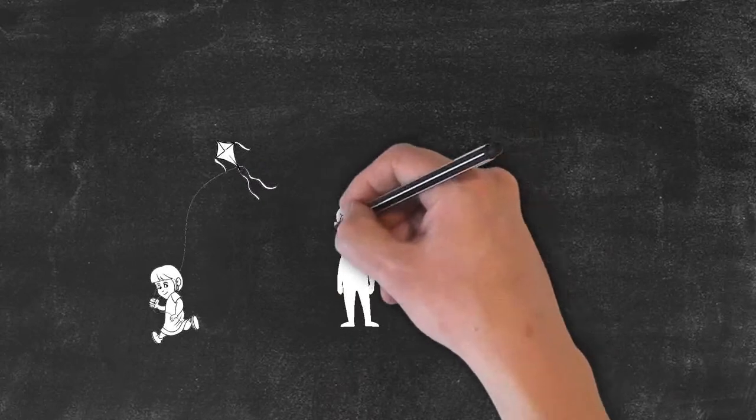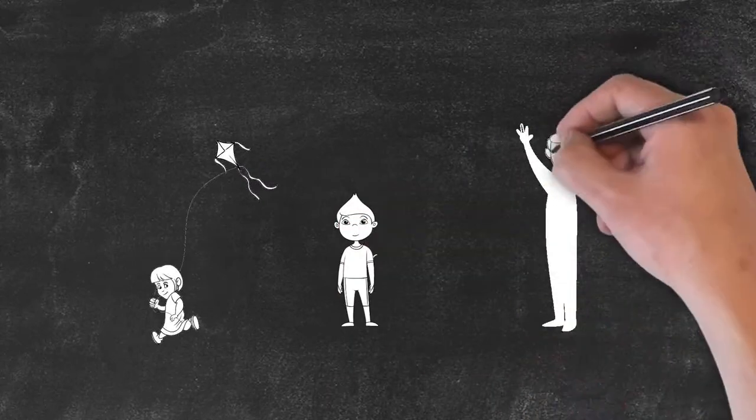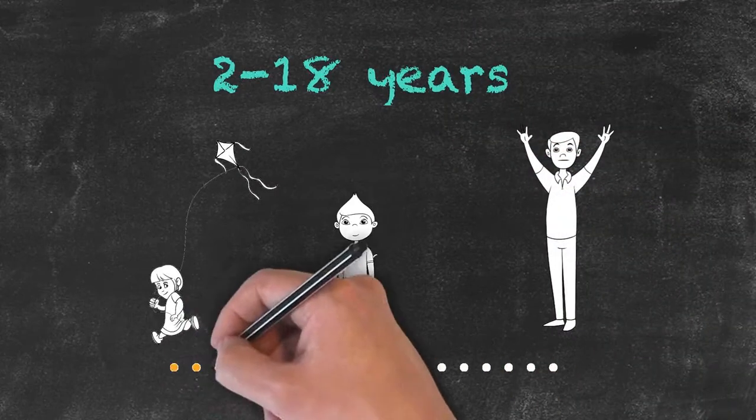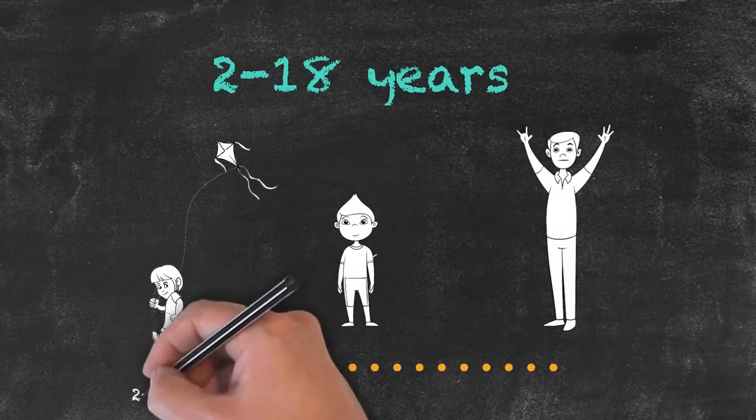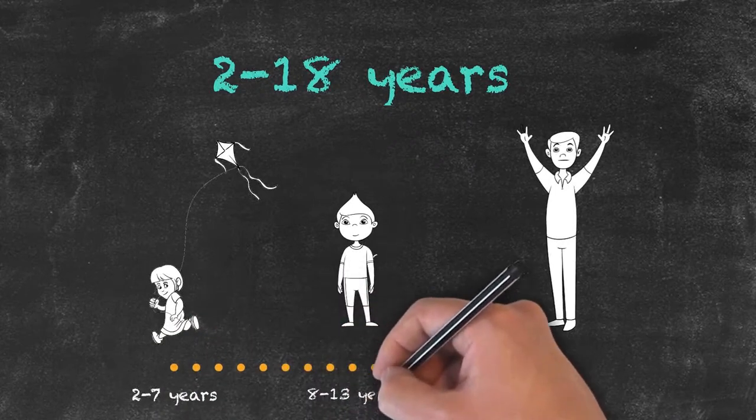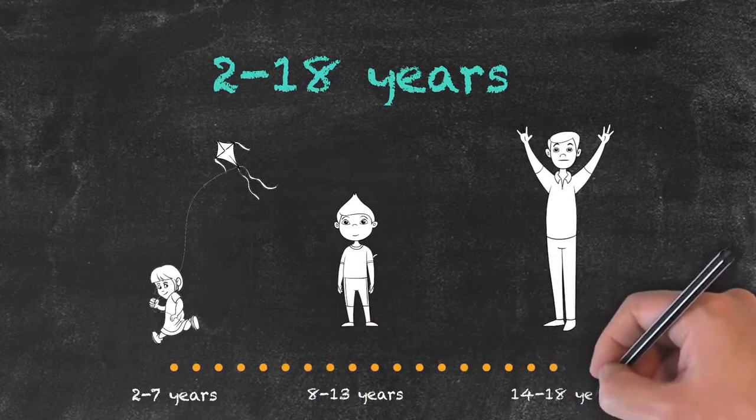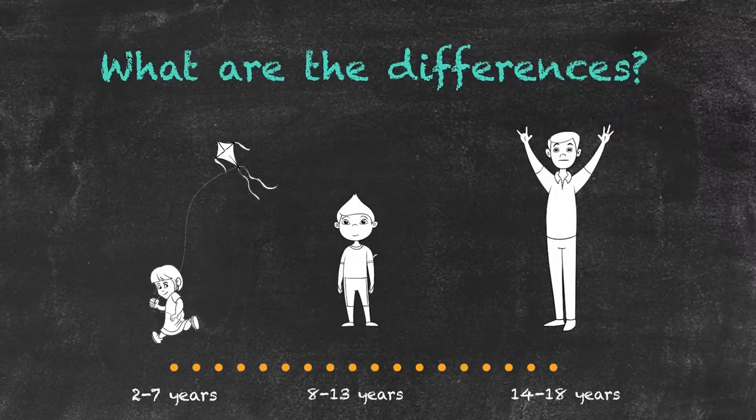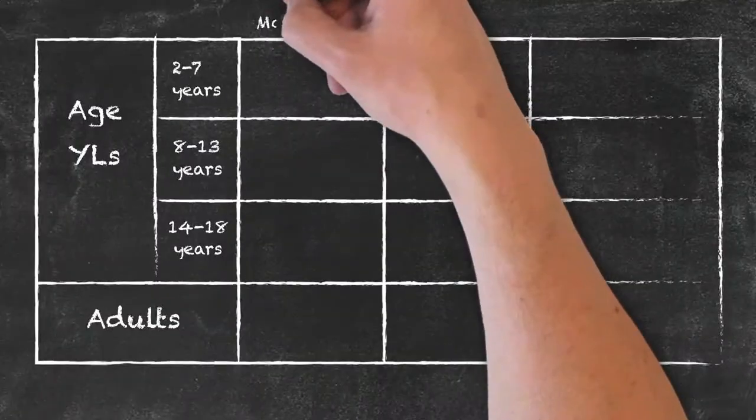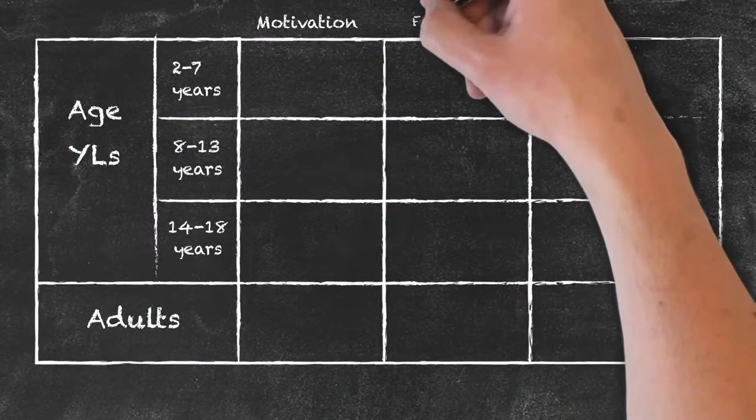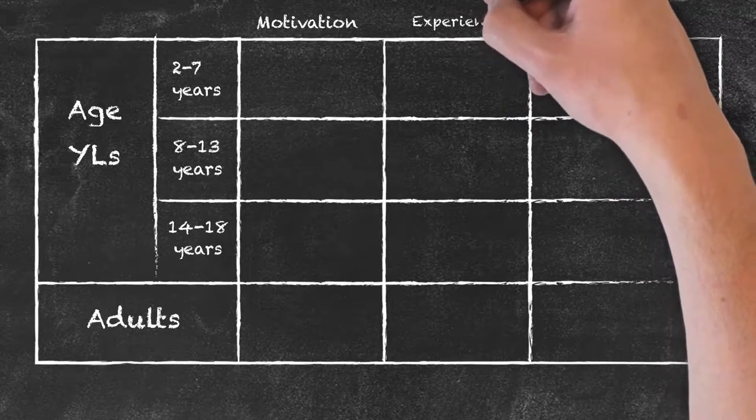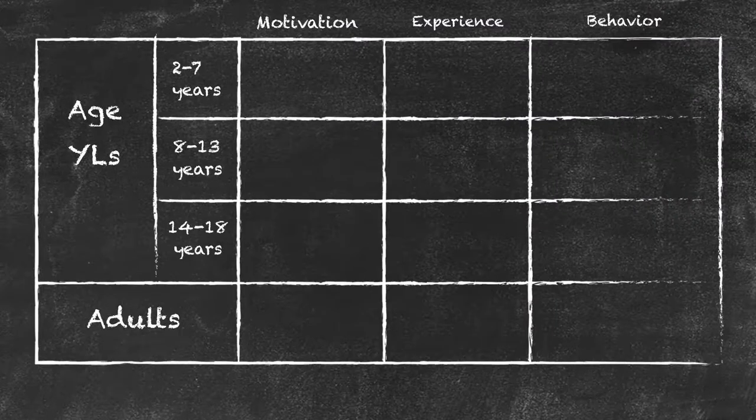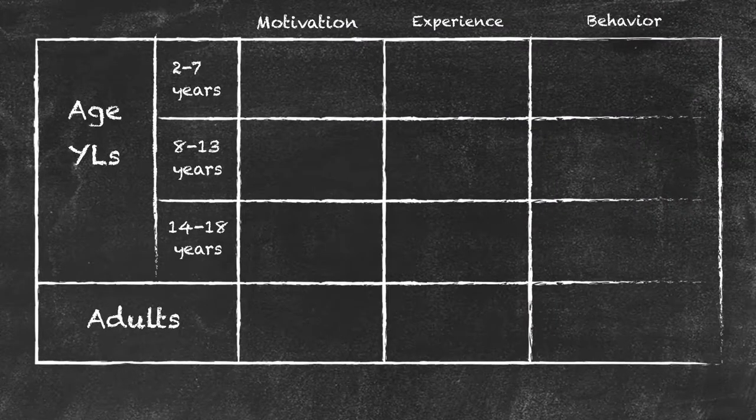Within the section of young learners we need to break those down further into some subgroups depending upon their age. So whilst different people may have different classifications for what they consider to be young learners, we'll take it anywhere between the ages of 2 and 18 and we'll split them down into those subsections: 2 to 7 years, 8 to 13 years, and then finally 14 to 18 years. Within each of those age groups, what are the different motivations that these students bring to the classroom, what different experiences do they bring, and what types of behavioural differences are there. We'll try to give two examples for each of these.